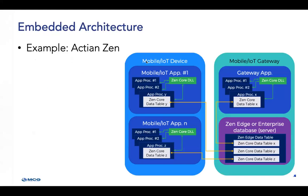Here's an example architecture with the Actian Zen product. There's a core database and a Zen edge database. On one mobile device there may be a couple of apps — actually many more than a couple. There is the Zen core data table — really a database — and the applications are on the device as well. They are connected to a mobile IoT gateway, one of the levels of the architecture, where they have a specialized database called Zen Edge. It's a very good architecture.